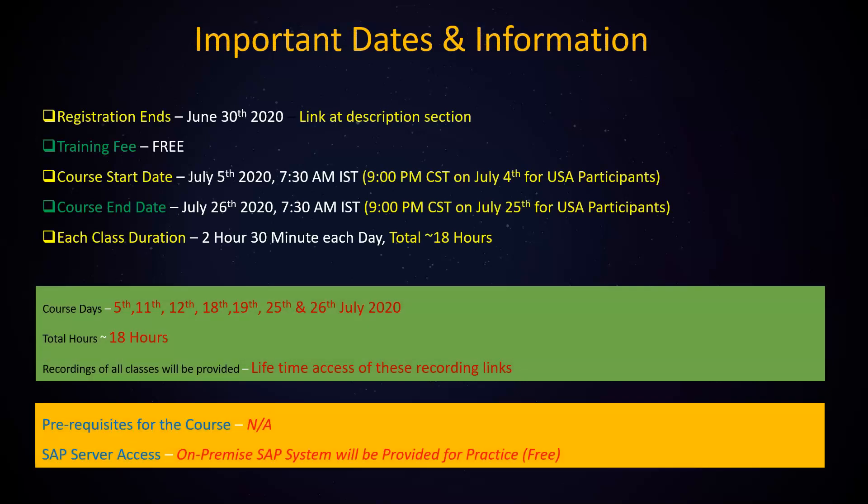We will close the registration process on 30th June 2020. The registration link is in the description section below. The training is completely free — you do not need to pay anything. The course starts on 5th of July at 7:30 am IST, which will be 9 pm CST in the USA the previous day. There will be 7 sessions in total and each class will be around 2.5 hours, making the total course duration around 18 hours. If you miss any class, do not worry — we will provide recordings which you can watch and come prepared for the next session. You will have lifetime access to these recordings and notes. There is no prerequisite for this course, and we will also provide you SAP server access to practice, also free. Since we are expecting a large volume of registration, please register at the earliest to book a seat.